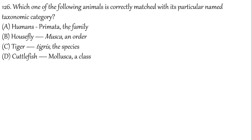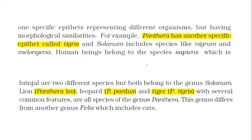Question 126: Correctly matched pairs. Humans — Primates is not a family. Musca — checking its order. Tiger's scientific name is Panthera tigris — 'tigris' is the species (specific epithet). Panthera has specific epithet 'tigris' for tiger. The correct answer confirms Panthera tigris as the species.